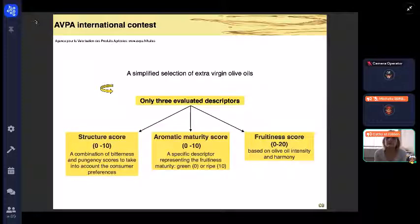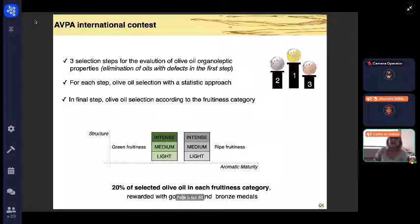The third score is called fruitiness score and is based on olive oil intensity and harmony. The AVPA competition is conducted in three steps during which olive oil samples are tested by experts. Samples with defects are eliminated in the first round. At present, a statistical approach is used to select the best olive oils. Unlike other competitions, all producers register without choosing the nature and intensity of the fruitiness of the sample.